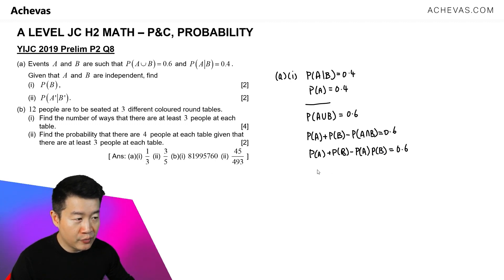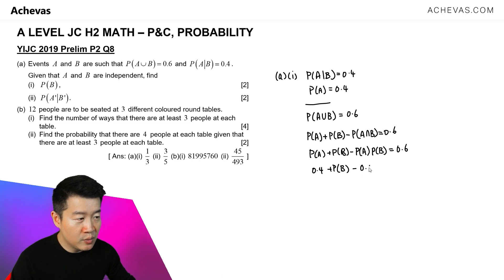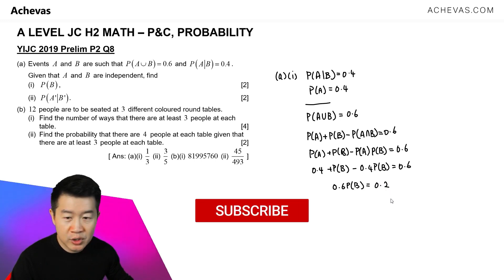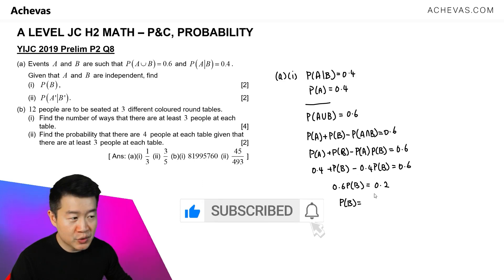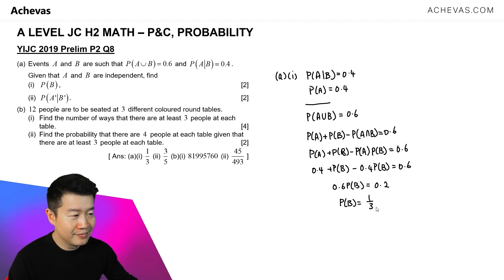Probability of A is 0.4, so I'm going to replace this by 0.4, plus probability of B, which we are supposed to find in part 1, then minus away probability of A, which is 0.4, multiplied by probability of B. This equals 0.6. So what we have is 0.6 times probability of B equals 0.2, and solving for probability of B gives us 1 over 3.